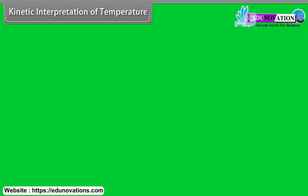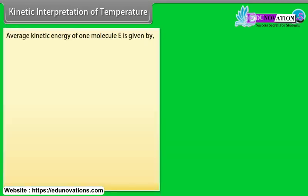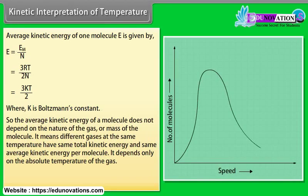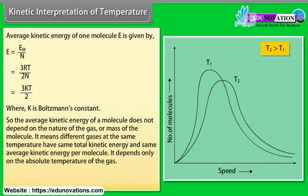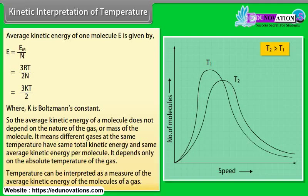Kinetic interpretation of temperature: Average kinetic energy of one molecule E is given by E is equal to Em upon N is equal to 3RT upon 2N is equal to 3KT by 2, where K is Boltzmann's constant. So the average kinetic energy of a molecule does not depend on the nature of the gas or mass of the molecule. It means different gases at the same temperature have same total kinetic energy and same average kinetic energy per molecule. It depends only on the absolute temperature of the gas. Temperature can be interpreted as a measure of the average kinetic energy of the molecules of a gas.